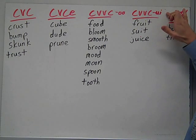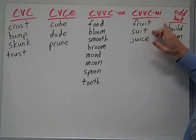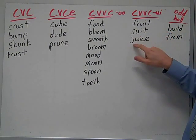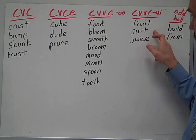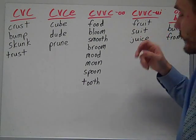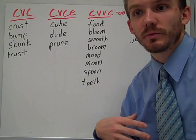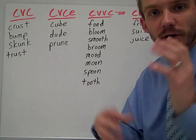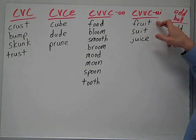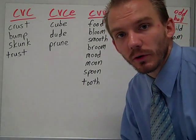The CVVC pattern with UI — still that long U sound. You have fruit, suit, and juice. Juice is what you drink, like orange juice. Suit is something nice and fancy that you wear — you need a coat, a vest, and matching pants. Fruit is a type of food you eat, like an apple or a banana.